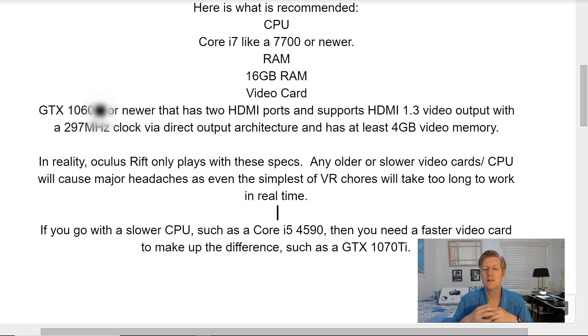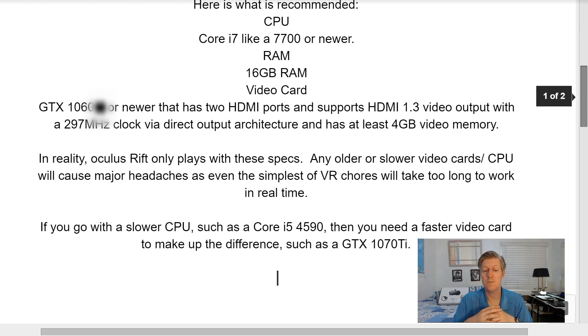In reality, the Oculus Rift only plays well with these specs. Any older or slower video card and CPU combination will cause major headaches, as even the simplest VR chores will take too long to work out in real time. If you do go with a slower CPU such as a Core i5 4590, then you need a faster video card to make up the difference — something like a GTX 1070 Ti or faster. Your virtual reality experience will always be better with a faster Core i7 processor and a newer video card, something like a GTX 1070, 1080 Ti, or even newer.